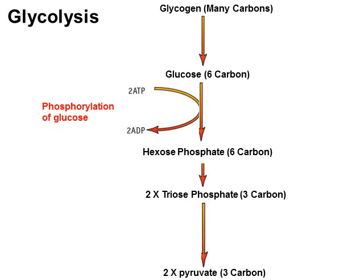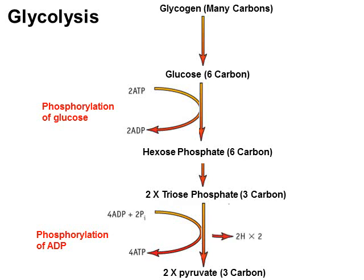The triose phosphates are used to produce two three-carbon pyruvate compounds. The product of glycolysis is one glucose producing two pyruvates. When the pyruvates are generated, you also phosphorylate ADP — in total you phosphorylate four ADPs to produce four ATPs per glucose, via substrate level phosphorylation. Although you use two ATPs, you produce four, so there is a net production of two ATPs. You also remove two hydrogens in a dehydrogenation reaction, and the hydrogens are picked up by NAD to produce reduced NAD.